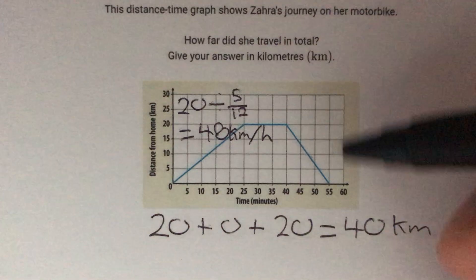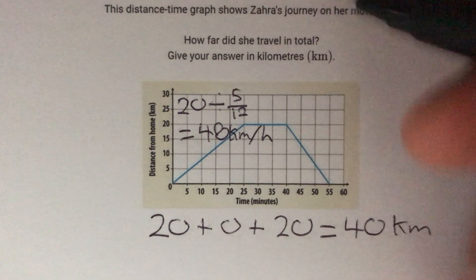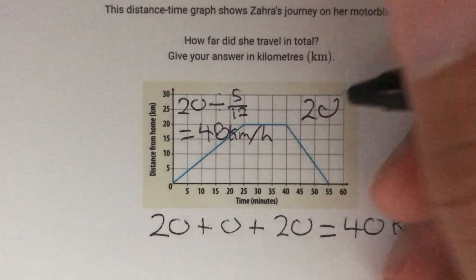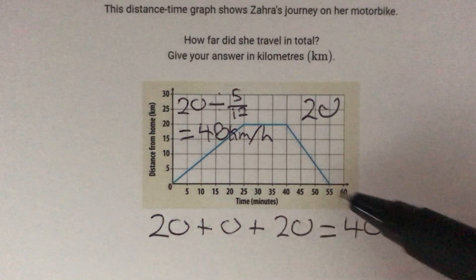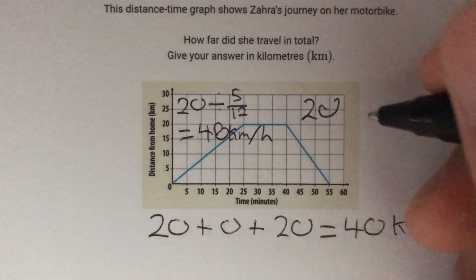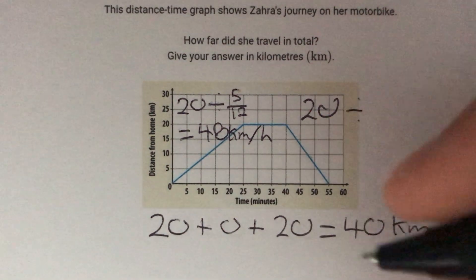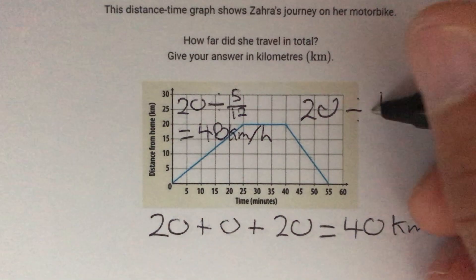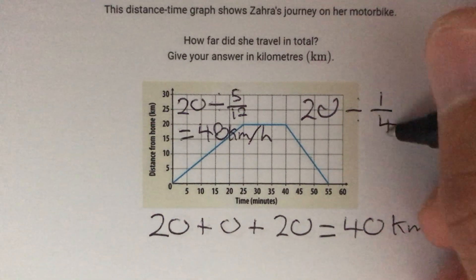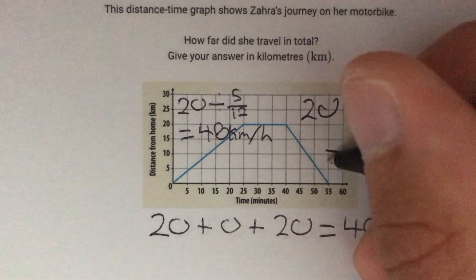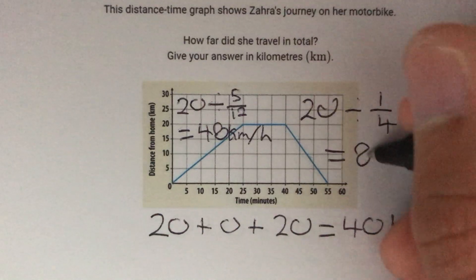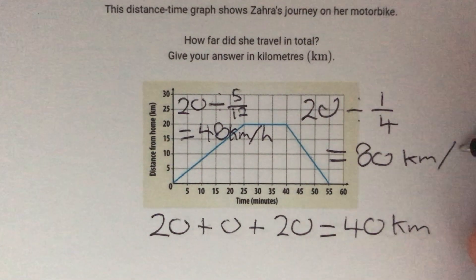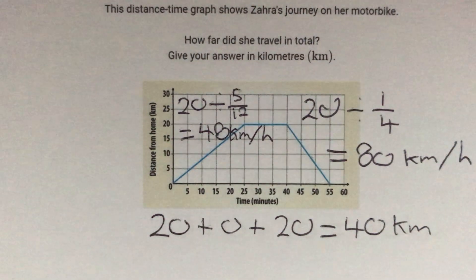In the third part, she's gone 20 kilometers again, and she's done it this time in 15 minutes. Well, 15 minutes is a quarter of an hour, so we can do 20 divided by a quarter, and this gives us a speed on the way back of 80 kilometers per hour.